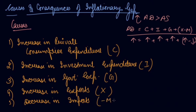So decrease in your imports. Sixth is a cut in tax rates. If your taxes are reduced, people will have more real income with them in order to demand more and purchase more goods because they are paying less in taxes. So in this case also your aggregate demand increases, and thus all these are the cases which cause an inflationary gap in your economy.